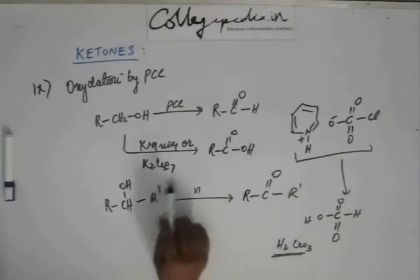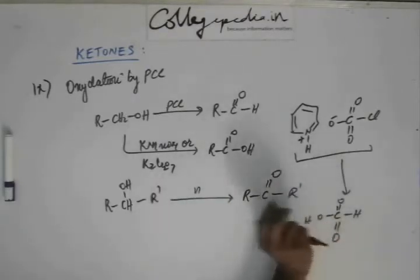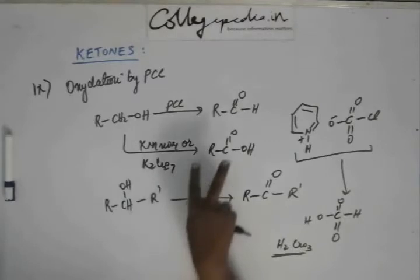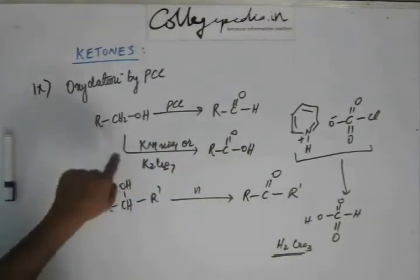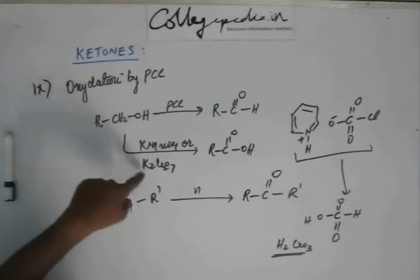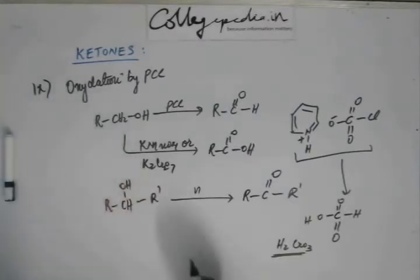The reason why here reaction goes ahead is because they are not oxidizing this alcohol by removal of hydrogen. They are oxidizing this alcohol by addition of oxygen. Now, both KMnO4 and K2Cr2O7 produce nascent oxygen.